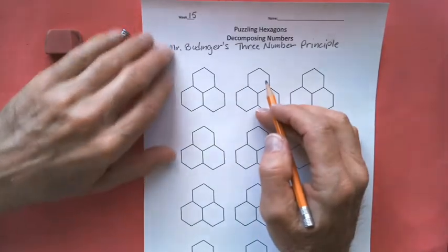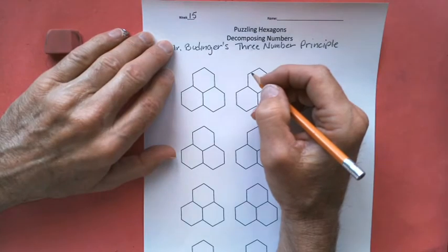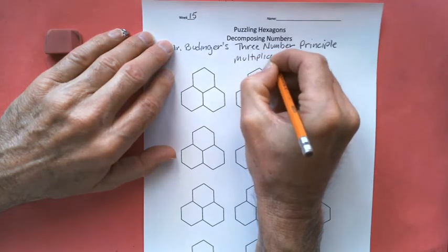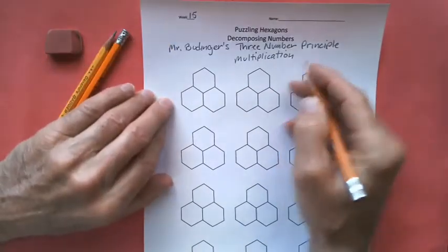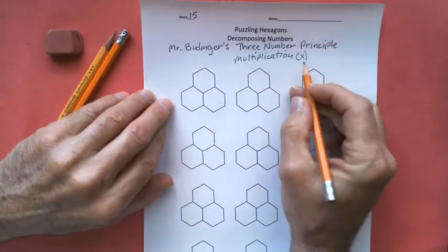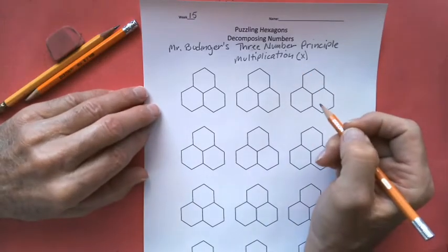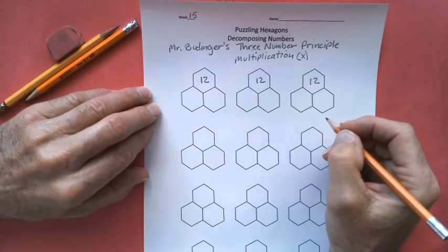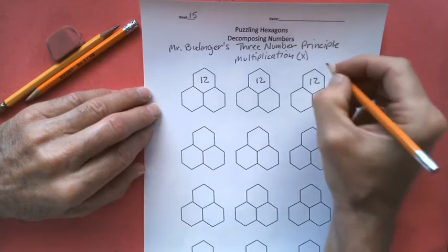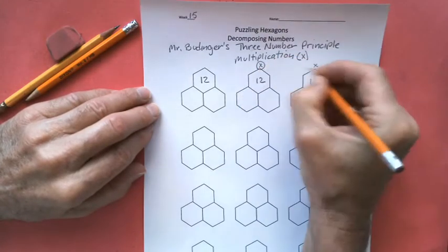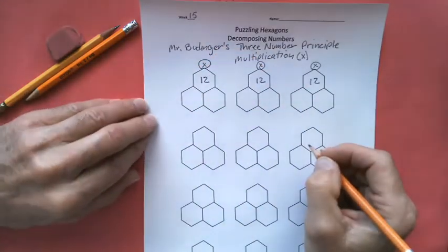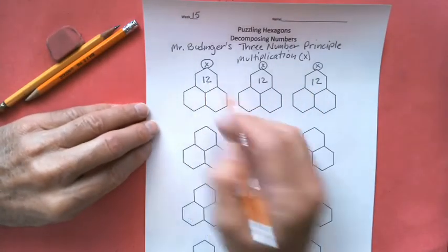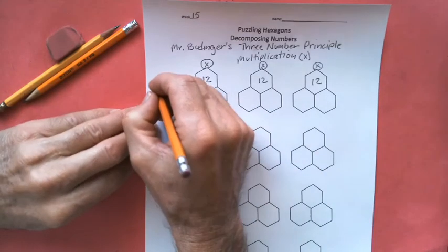In puzzling hexagons, we're going to start with multiplication. I'm going to put a little multiplication symbol up on top here. So this is what we're doing as multiplication, just so you don't forget. Now, what do we call this number up here if we're starting with the very largest number in multiplication, the number that comes after the equal sign? This is going to be the product.